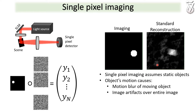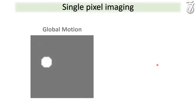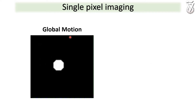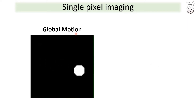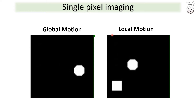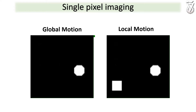In our work, we propose algorithms to improve the reconstruction of dynamic objects. We divide our algorithms into two: one that handles global motion of the entire scene, and another that handles local motion of only parts of the scene.